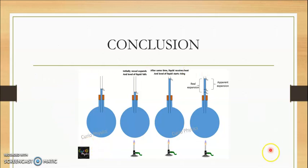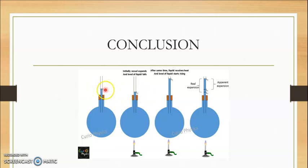To conclude: we have a liquid in a round-bottom flask at initial level L1. We apply heat, and the level drops to L2 because the vessel expands first and the liquid falls. Then as the container warms up and transfers heat to the liquid, the liquid begins to expand and the level rises from L2 towards L3.